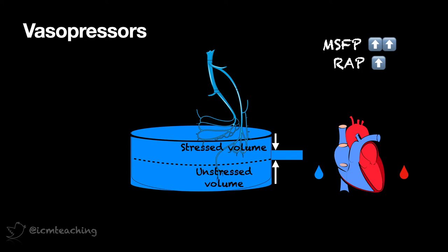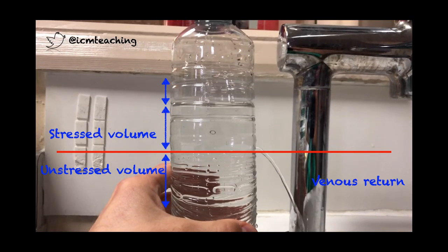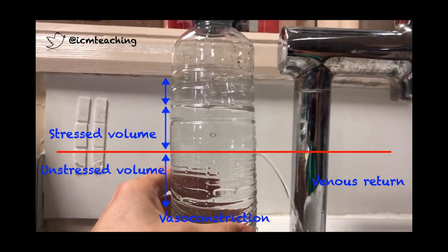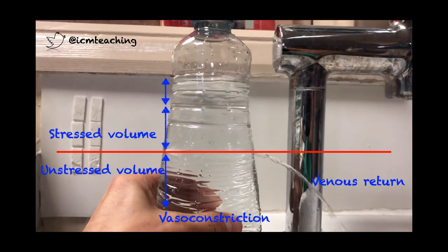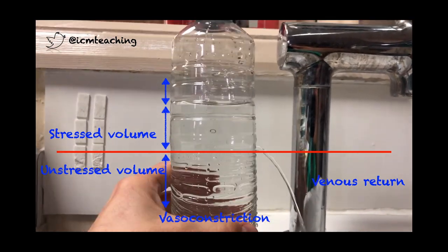So this is when we need to use vasopressor drugs to reduce the size of the tank, and convert unstressed volume back to stressed volume to increase venous return and cardiac output. Going back to our example of hypotensive patients after a spinal, any of you who are anaesthetists will know that while a fluid bolus in these circumstances is pretty useless, a bit of vasopressor works wonders. And the same concept applies to vasodilated septic patients. Here's a practical example to illustrate how compressing the bottle converts unstressed volume to stressed volume, which increases flow out of the bottle — just like sympathetic activation or using vasopressor drugs.